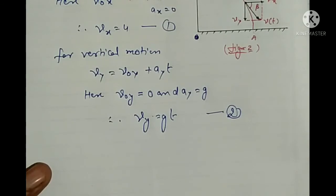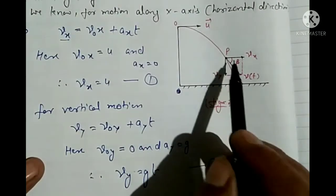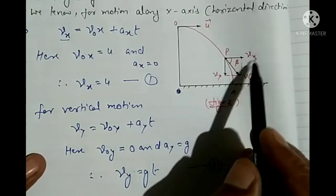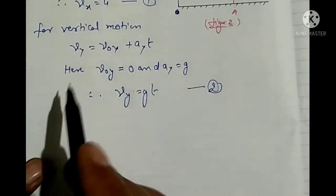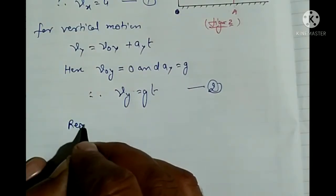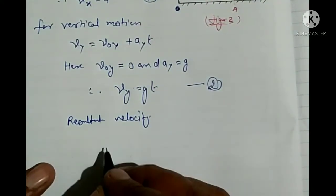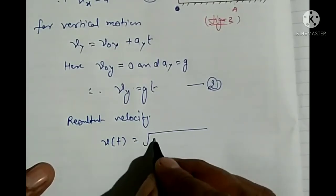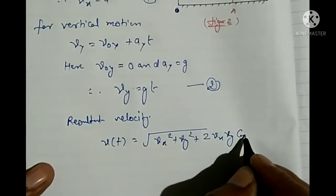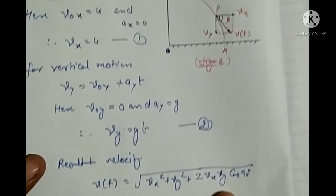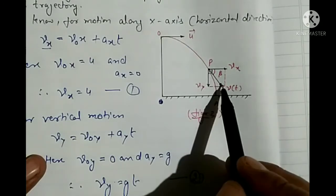Both Vx and Vy components of velocity are perpendicular to each other. Velocity V has been resolved into two components — horizontal component Vx and vertical component Vy, which are perpendicular. Using the parallelogram law of vectors, the resultant velocity at time t is: V(t) = √(Vx² + Vy² + 2·Vx·Vy·cos90°).